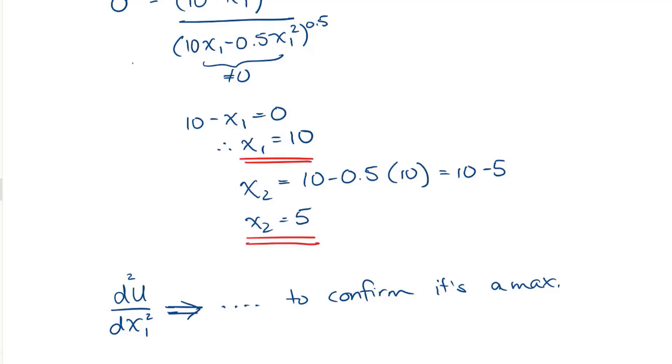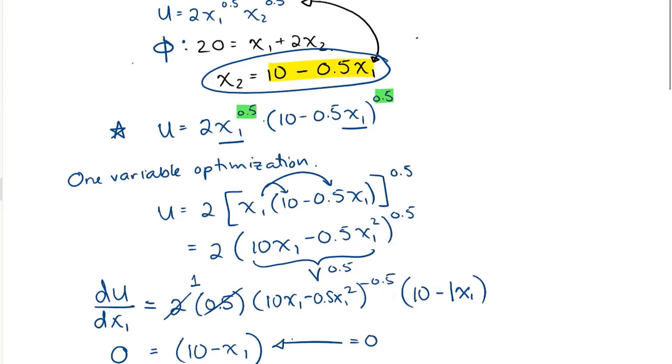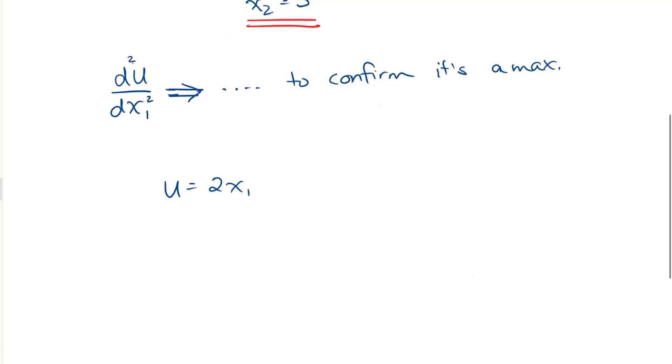So now I have the maximum X1 and X2 values, and I can solve for what the corresponding utility is. So utility would be equal to 2 X1 to the power of 0.5, X2 to the power of 0.5. It's going to be 2 times 10 to the power of 0.5 times 5 to the power of 0.5. And that is going to give me 14.142.